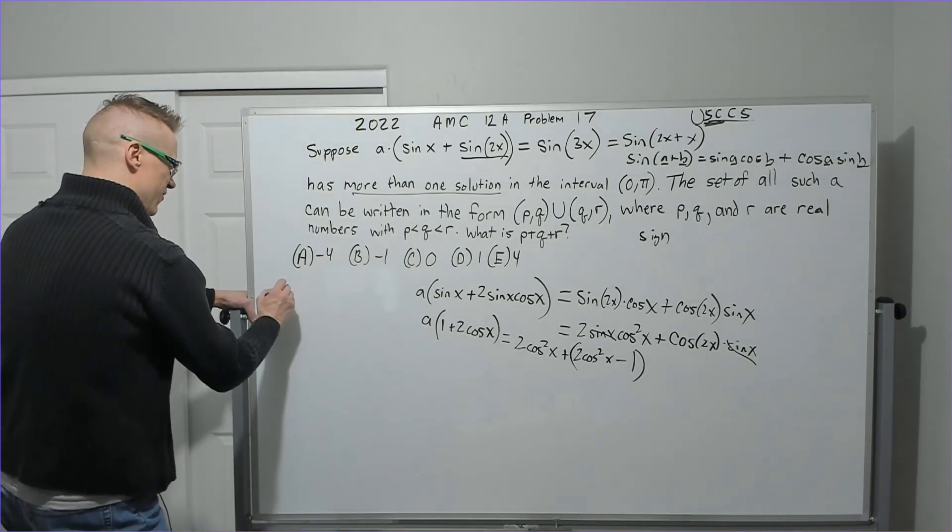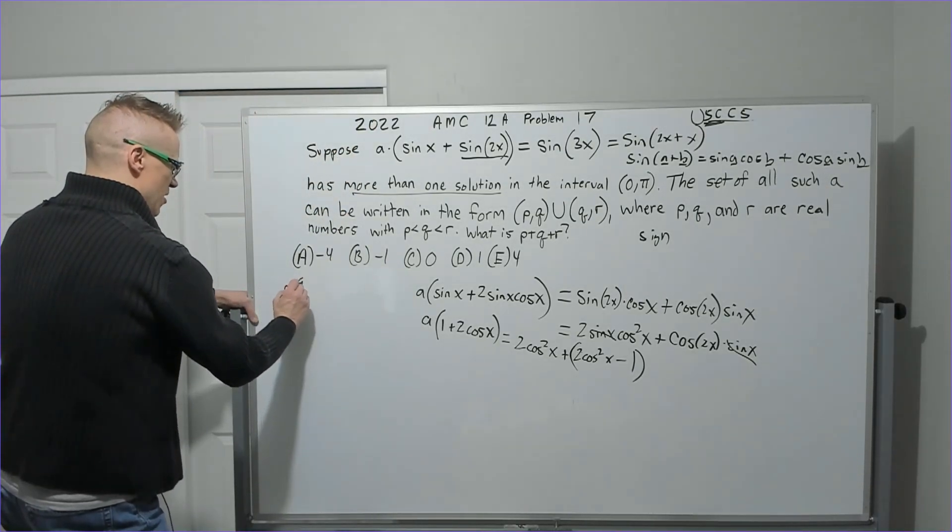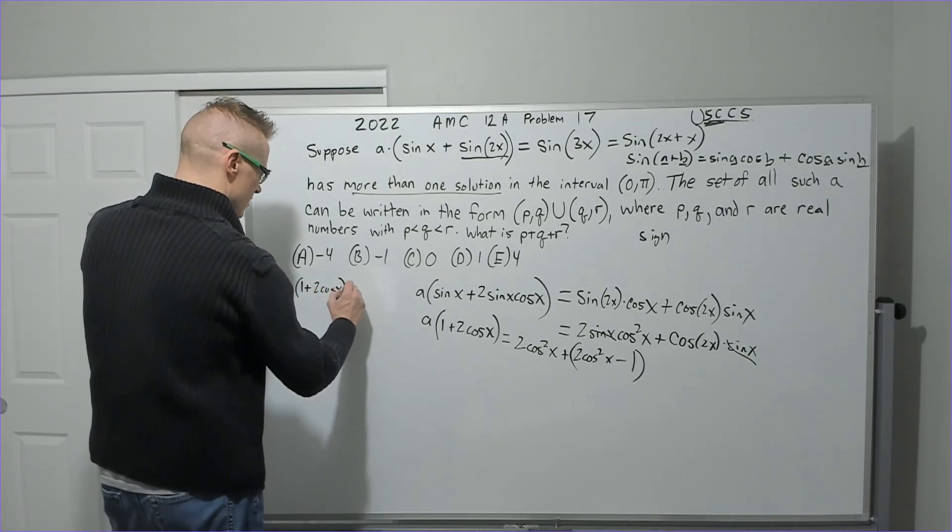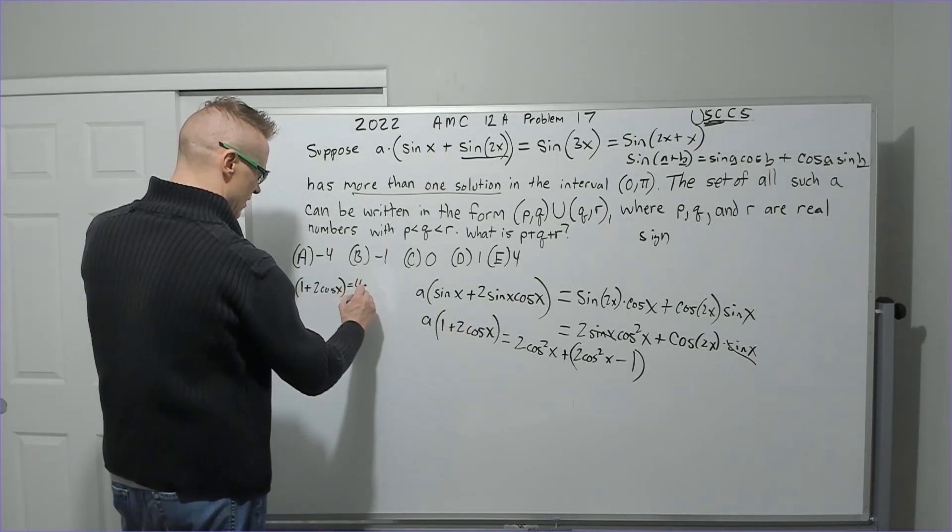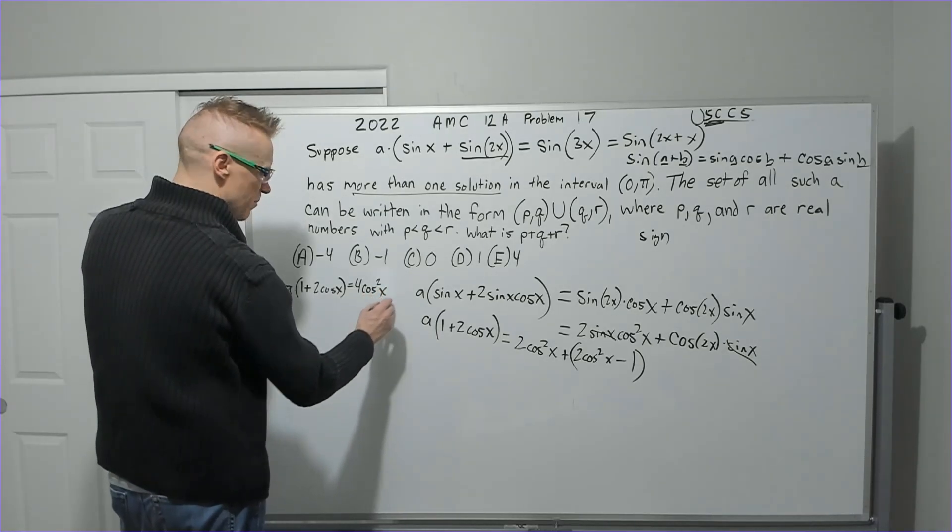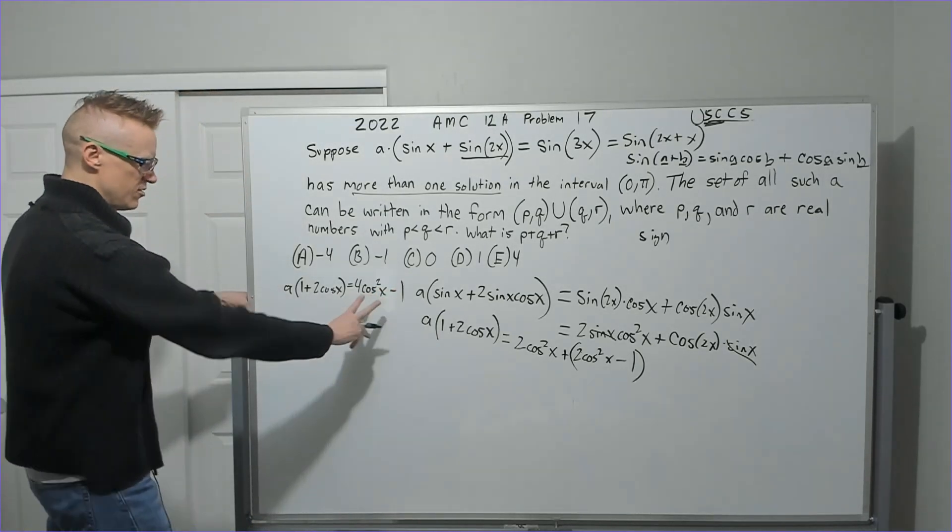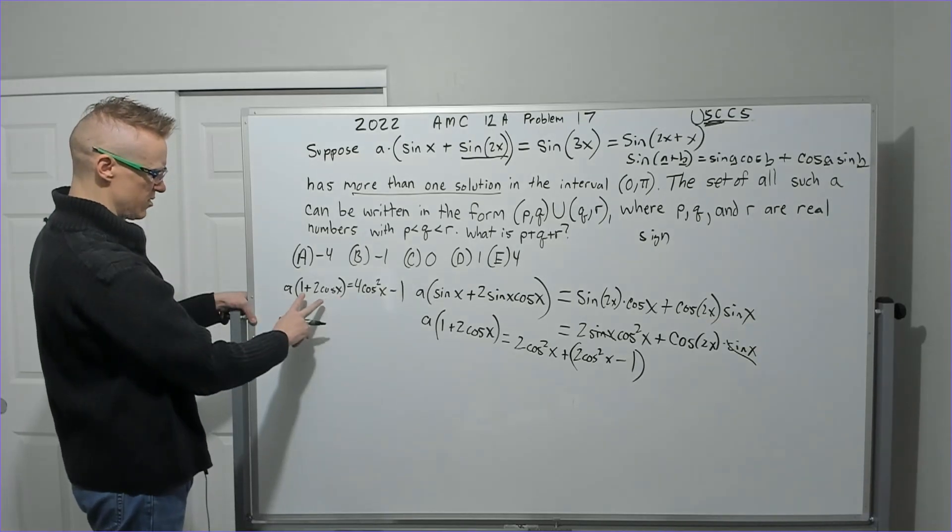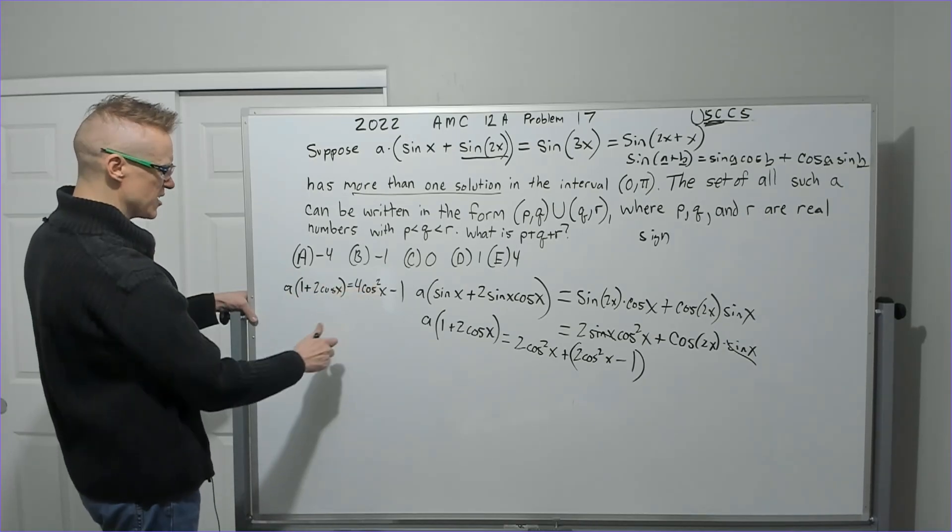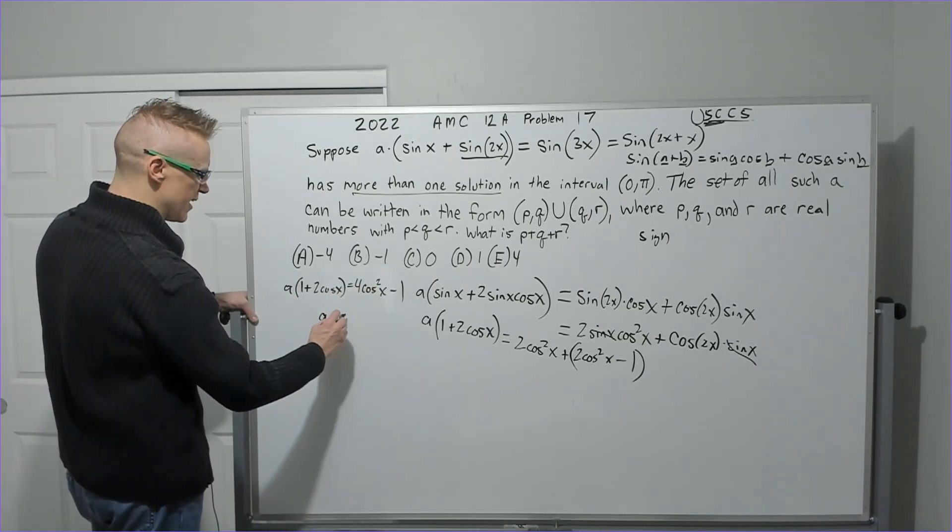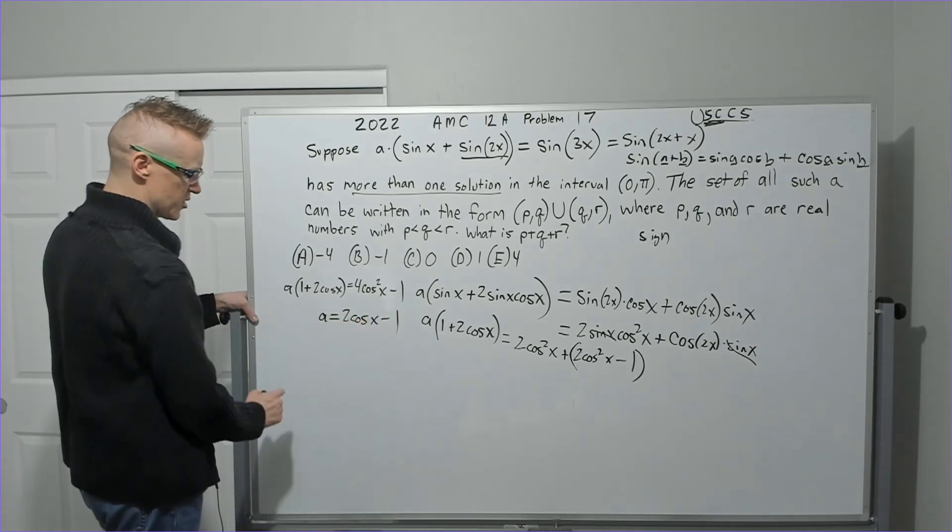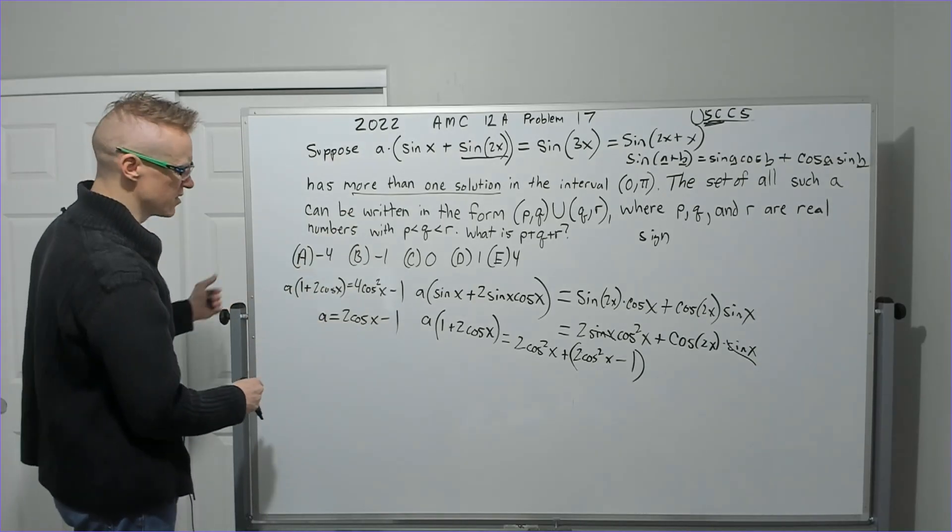So now what? We're going to have A times 1 plus 2 cosine of x equals 2 cosine squared plus 2 cosine squared is 4 cosine squared of x and then minus 1. Now, I do notice this is difference of squares, and if I switch the order, it would be just right. 2 cos of x plus 1 is one of the factors. So we could conclude that a is equal to 2 cos of x minus 1, because when you divide, it divides into that difference of squares.